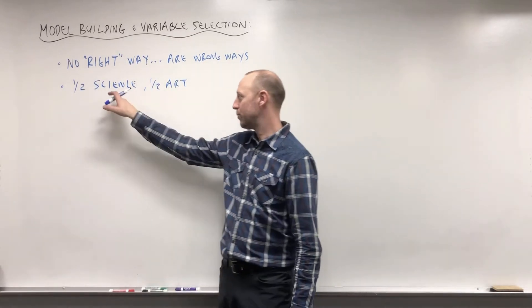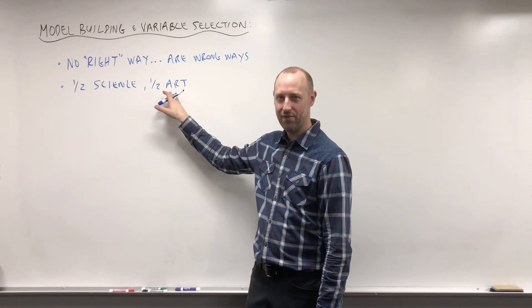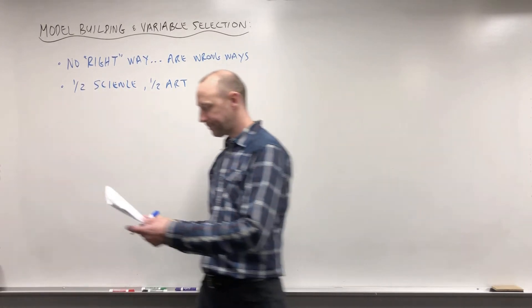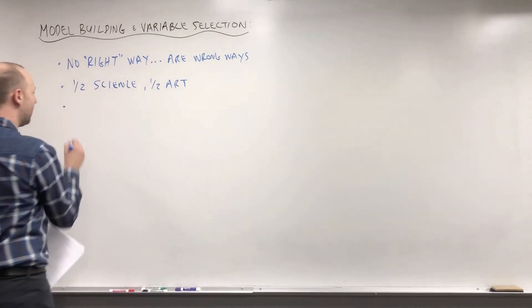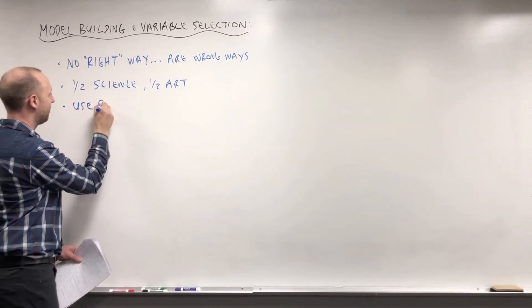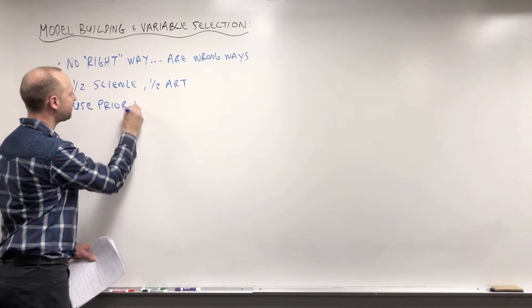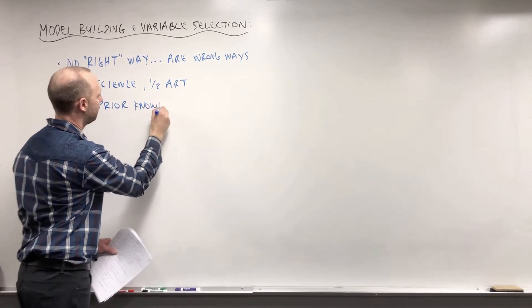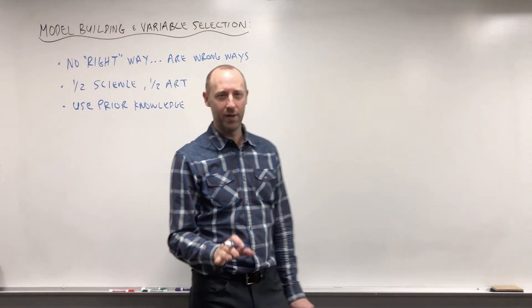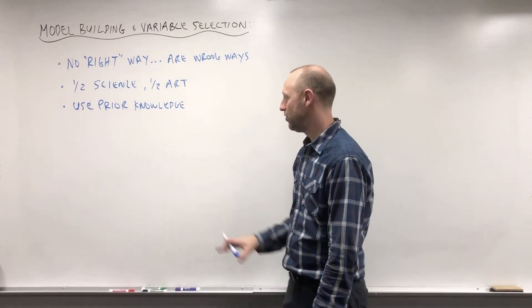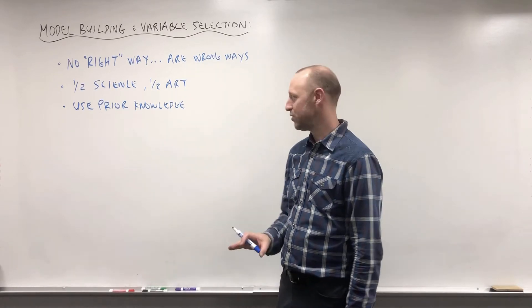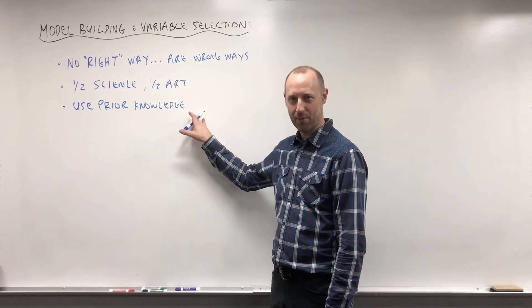One thing you want to incorporate is using prior knowledge. So use what you already know about this subject area or this research question. If you know certain variables are confounders, make sure you measure those when you collect data and adjust for them in your model. Incorporate the things you already know.